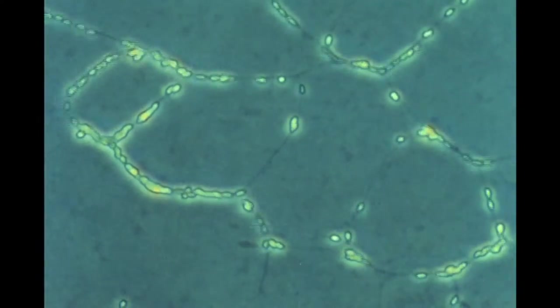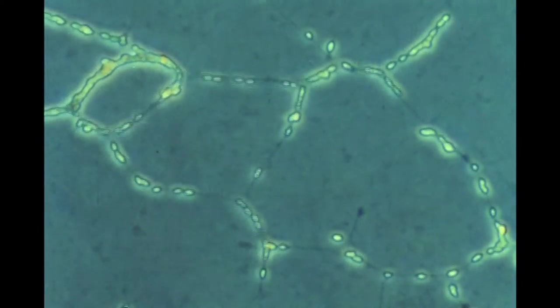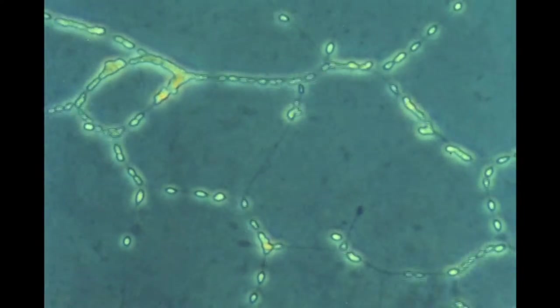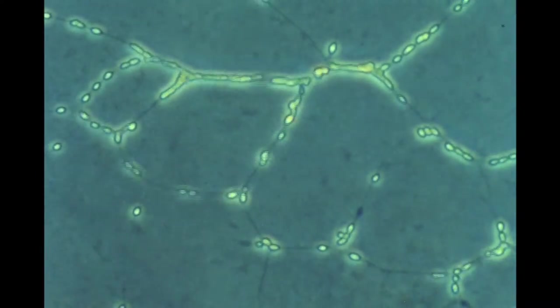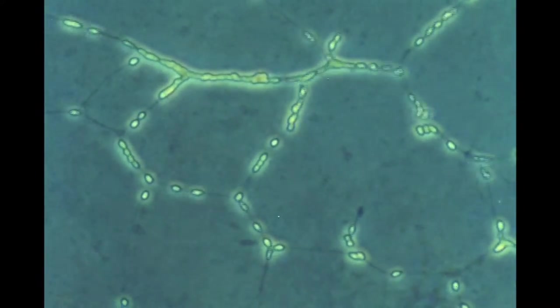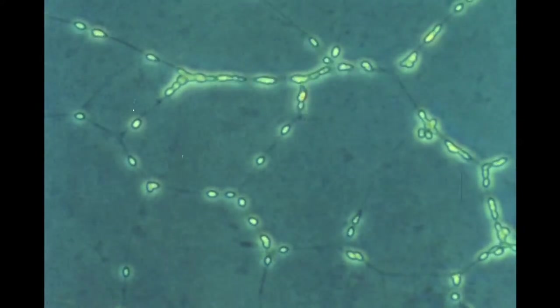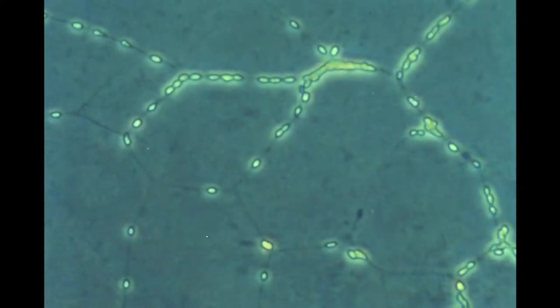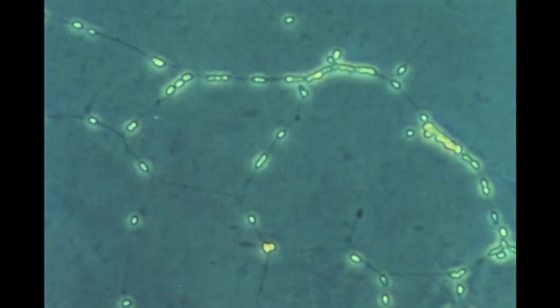The mechanism by which the individual cells move is not understood. There are no specialized locomotory structures such as cilia, flagella, or pseudopodia. The speed of movement varies in different isolates from a few to hundreds of microns per minute. This scene has been speeded up 700 times.